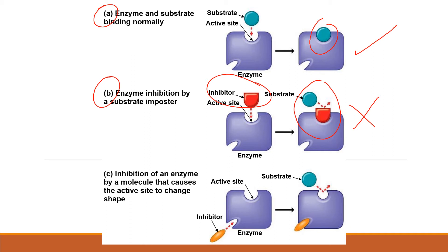I like to think of it as a parking spot analogy: the active site is a parking spot and the original substrate is your car. You usually park your car there, but one day another car cuts you off and claims the spot. If that new car claims the spot, you cannot park your car there. Similarly, when this happens with enzymes, the enzyme is not going to be able to function — and we refer to those inhibitors as competitive inhibitors.